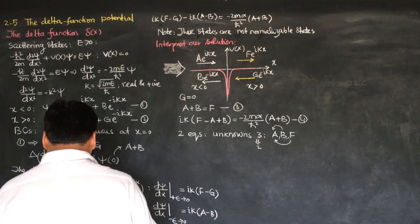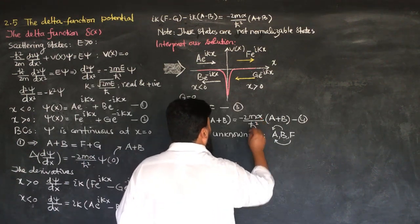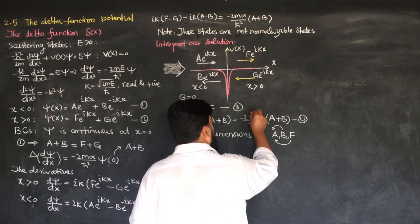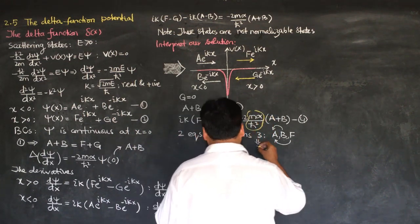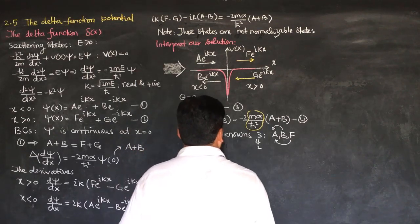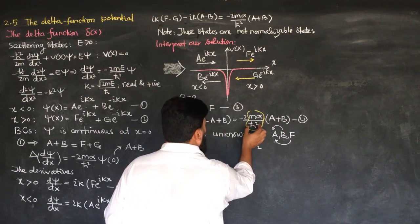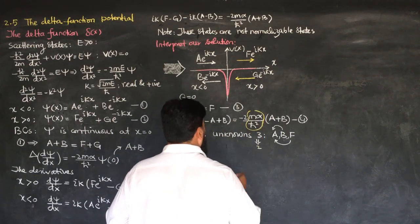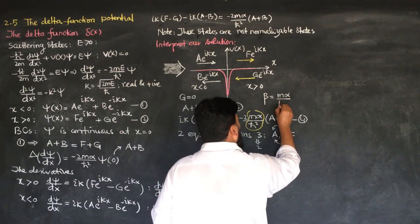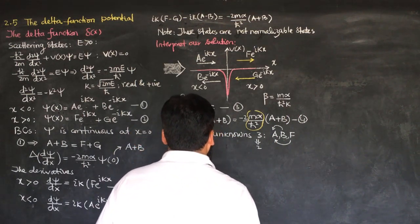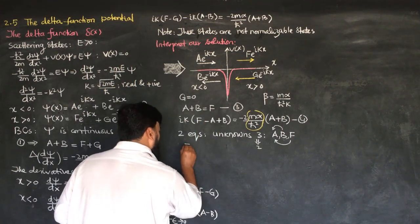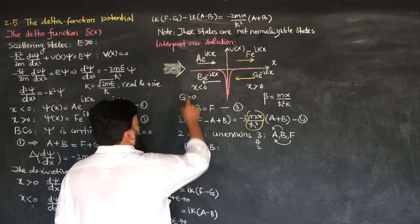Let's start with a shortcut: suppose β equals mα over ℏ²k. This is the variable I am introducing, so I can now rewrite my two equations. Equation 3 gives f equals a plus b, and equation 4 can be rewritten using β.